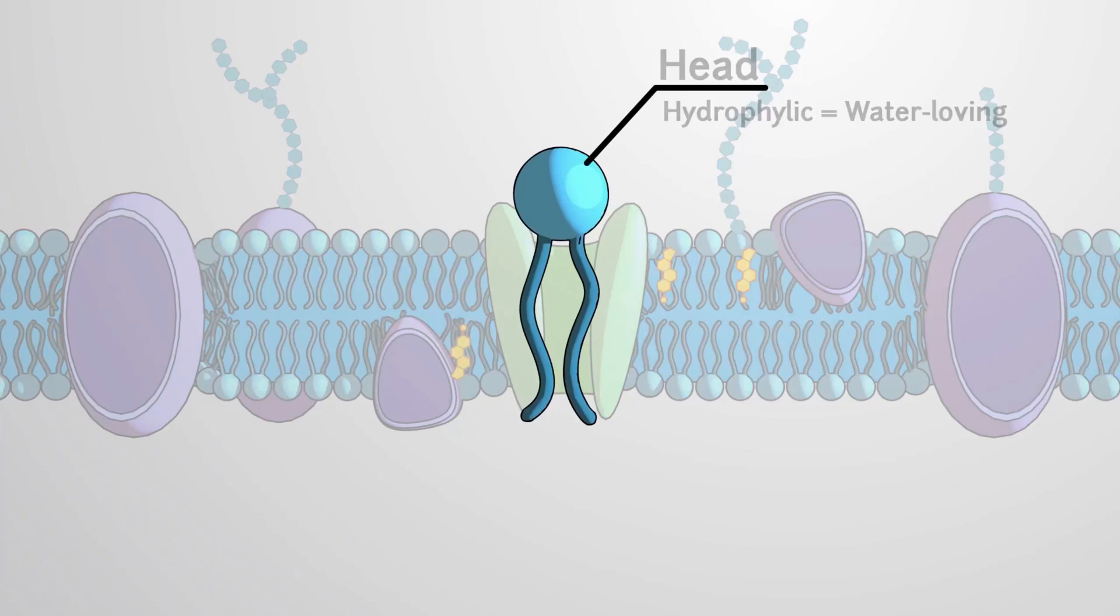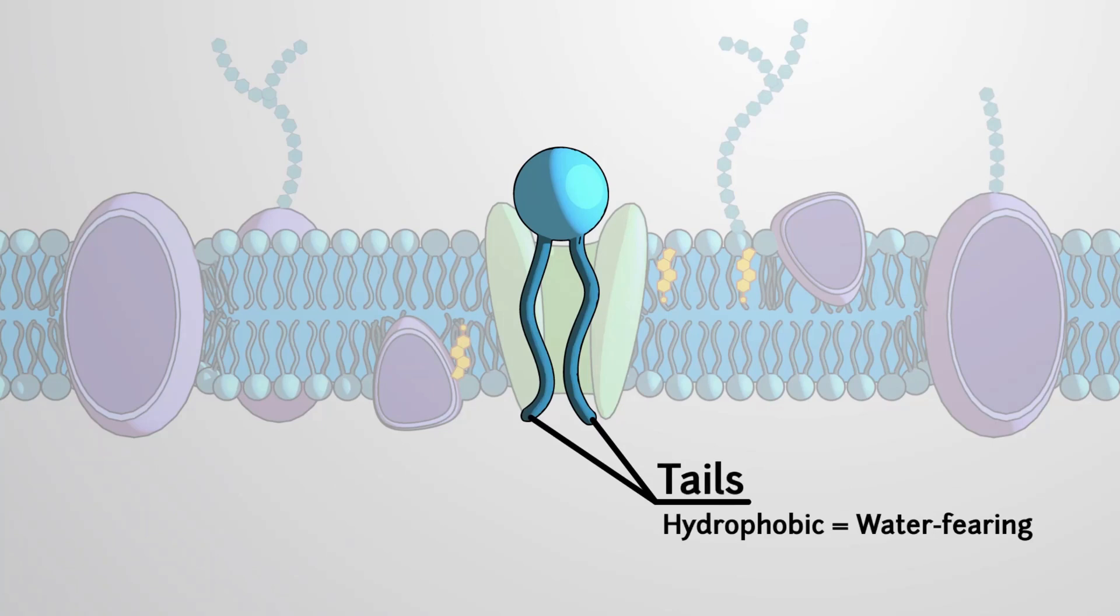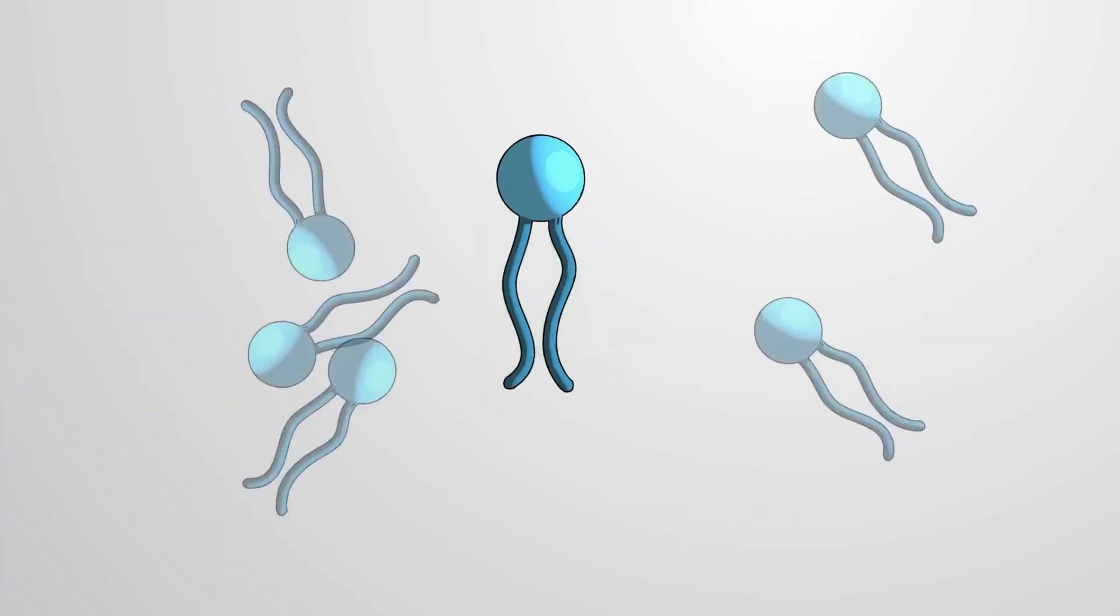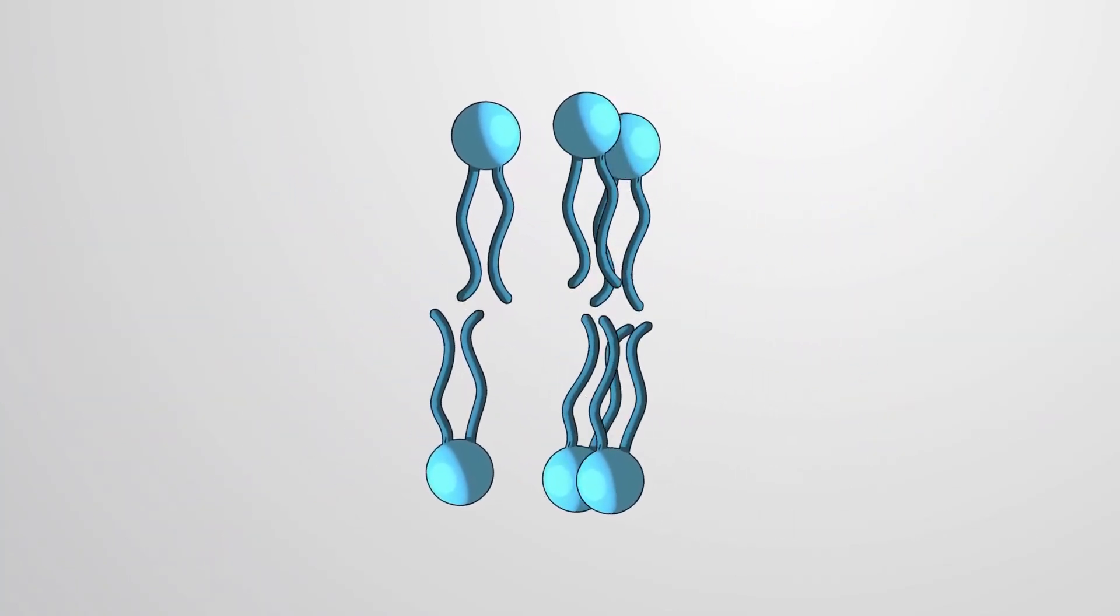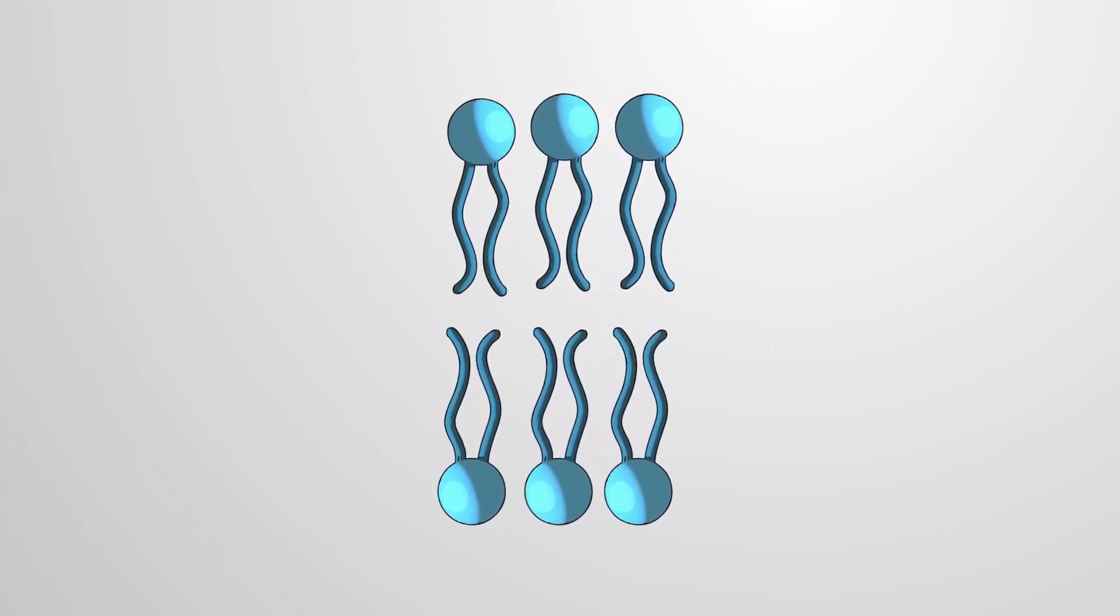Phospholipids consist of a hydrophilic, water-loving head and two hydrophobic, water-fearing, fatty acid tails and spontaneously form a lipid bilayer by arranging the hydrophobic tails inward and the hydrophilic heads facing outward.